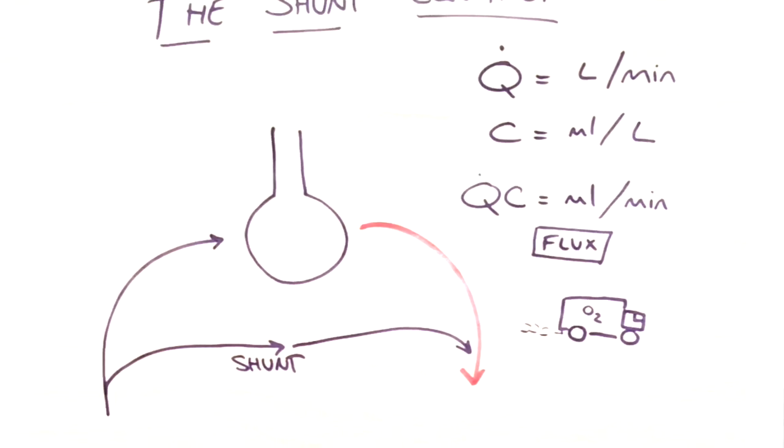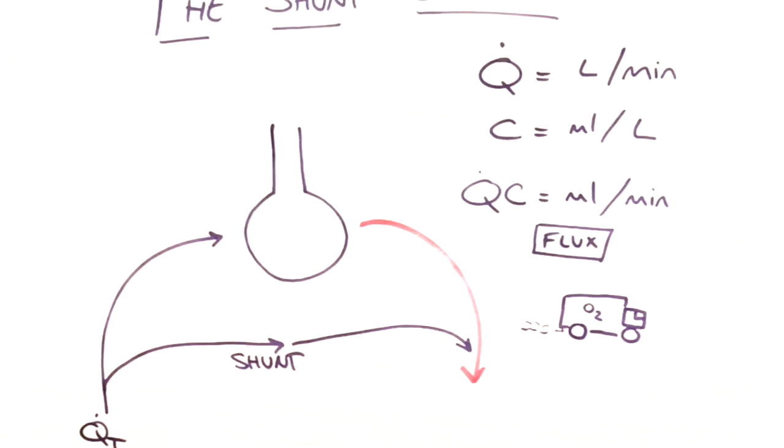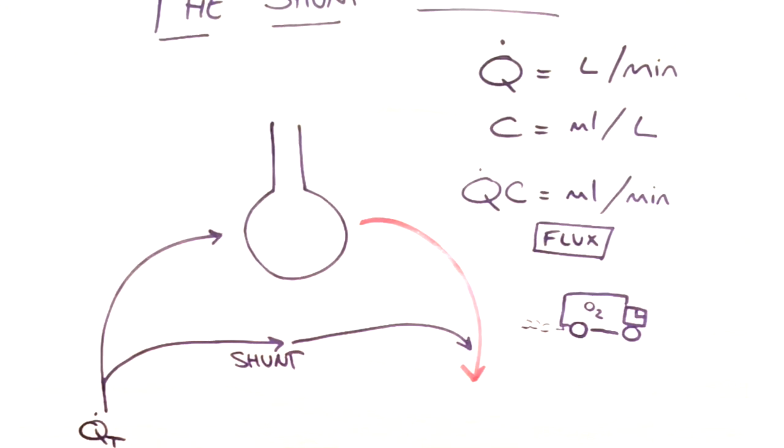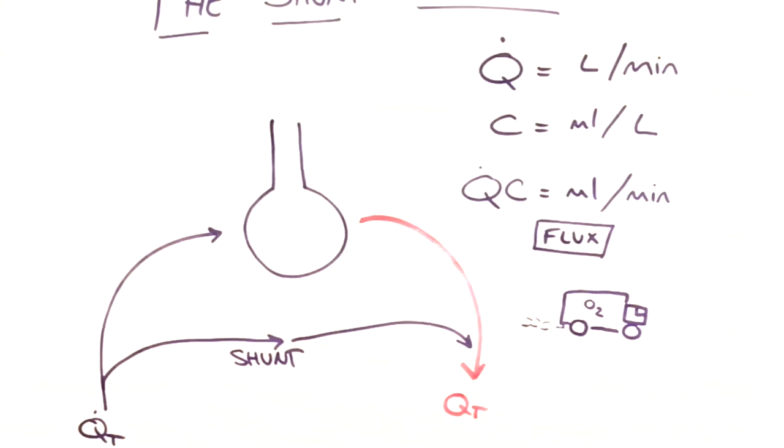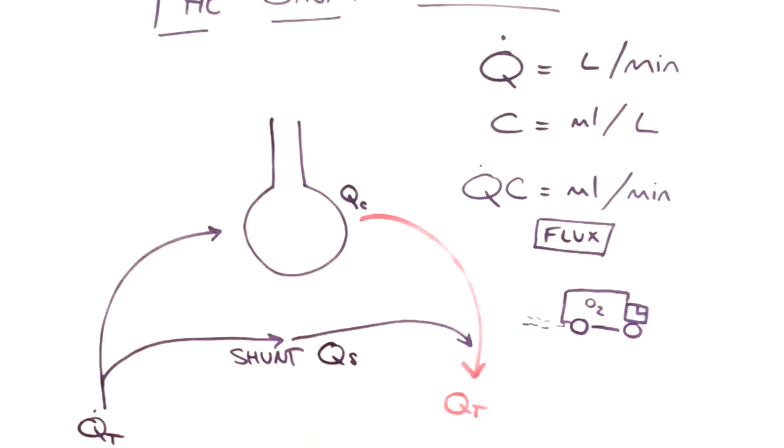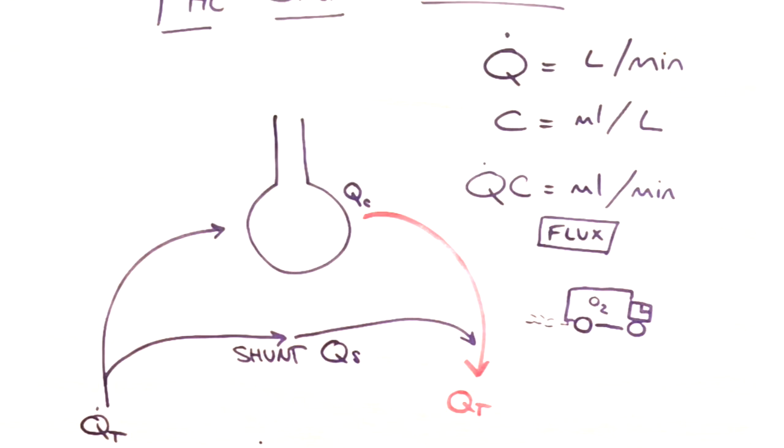So let's put some of these terms in our diagram. We've got the total flow coming out of the heart, which is QT, our total cardiac output. And assuming no blood is lost into the lungs or gained out of thin air, that's the same flow that's going to return to the left side of the heart. Some of that flow is going to go via the alveoli and some is going to be shunted. So here we make our first quick equation: the total flow is the sum of the shunted flow and the flow going through the alveolar capillaries.